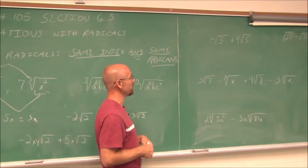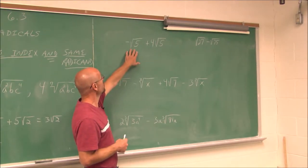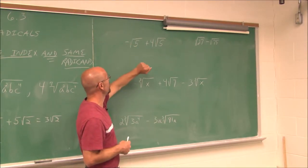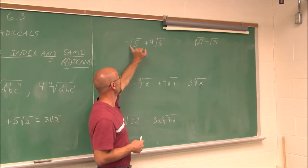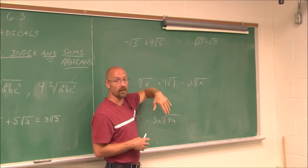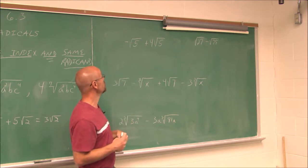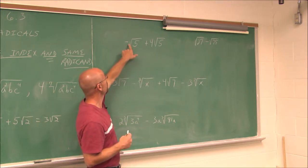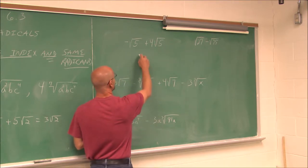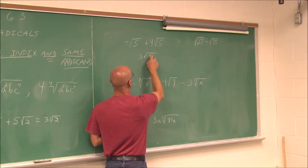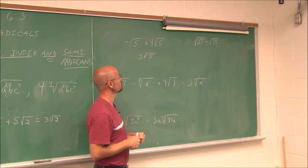Let's look at some addition and subtraction examples. For the first example, I have negative square root of 5 plus 4 square root of 5. The indexes are the same and the radicands are the same, and there are no variables, so we can do this — they are like. If I have negative 1 of these and I'm going to add 4 of them, I'm going to get 3 square roots of 5.